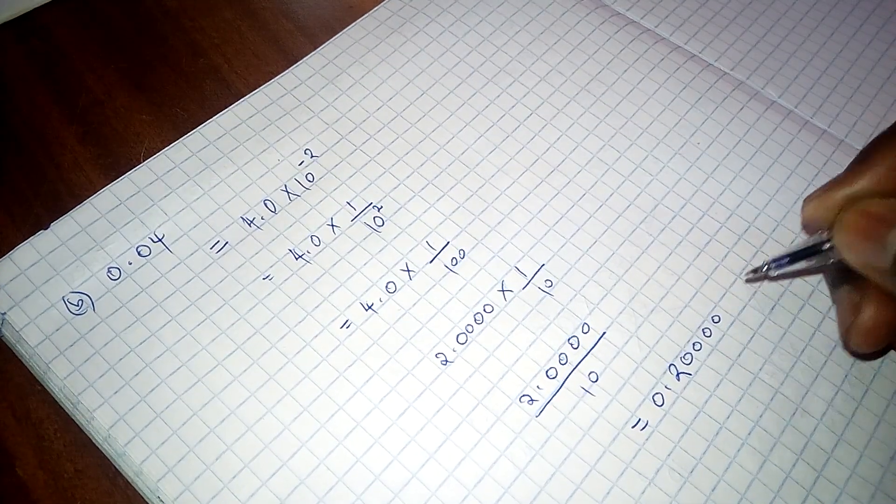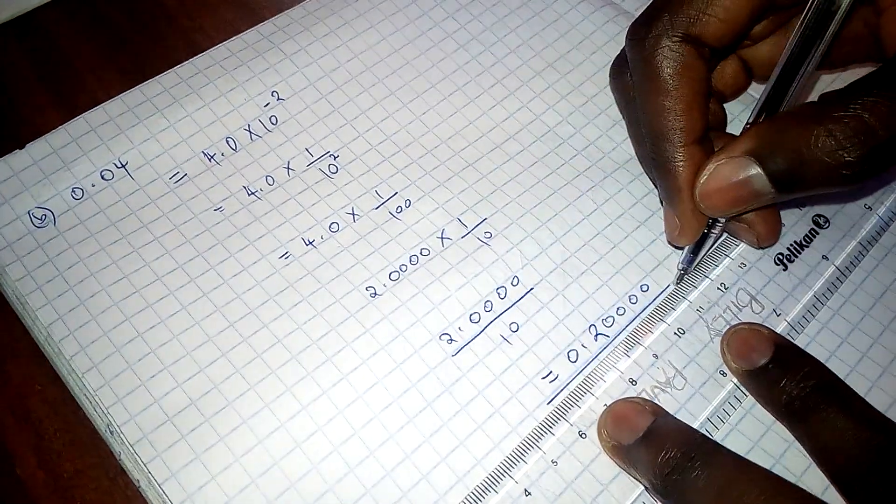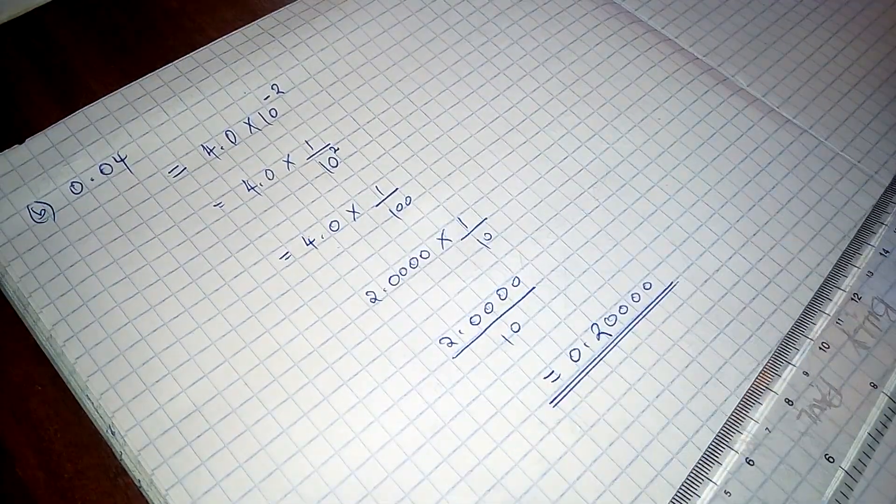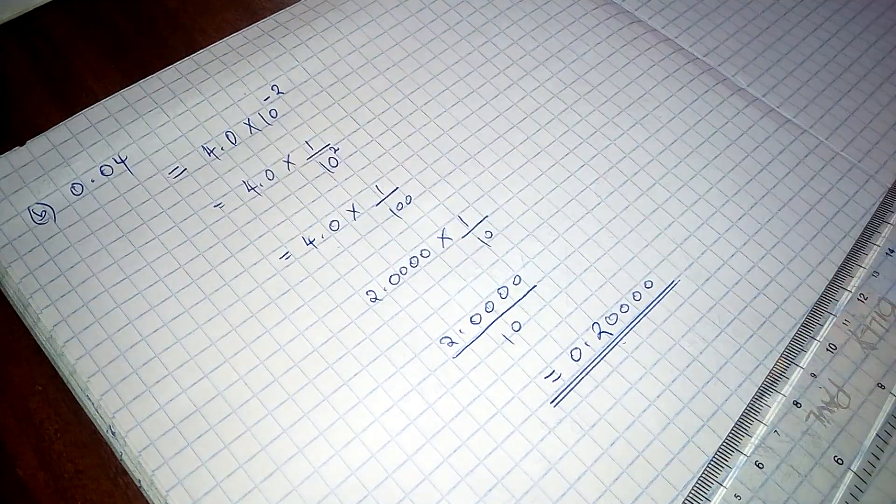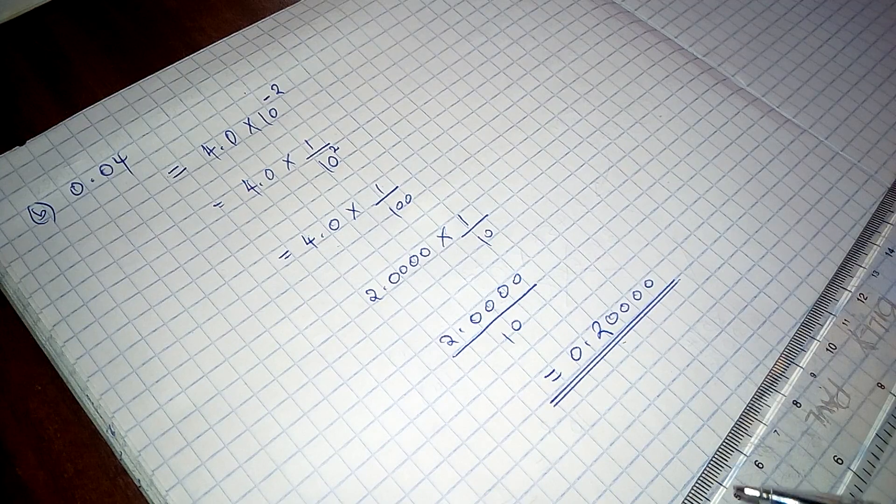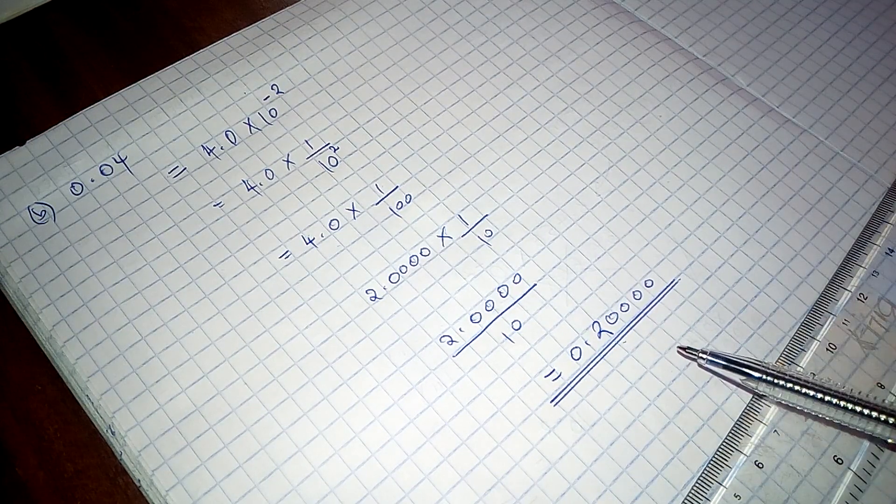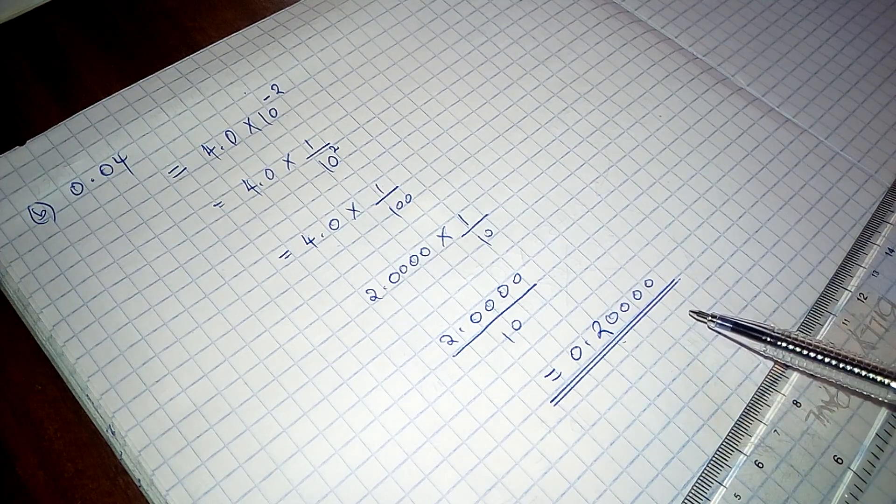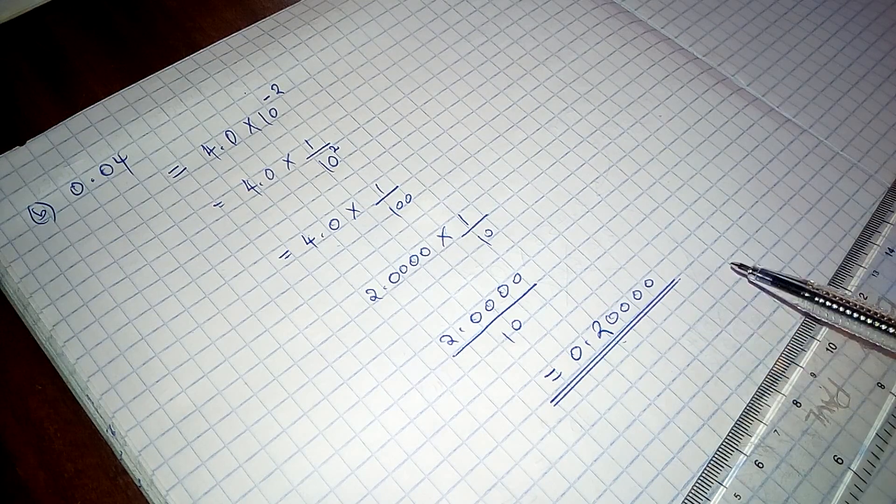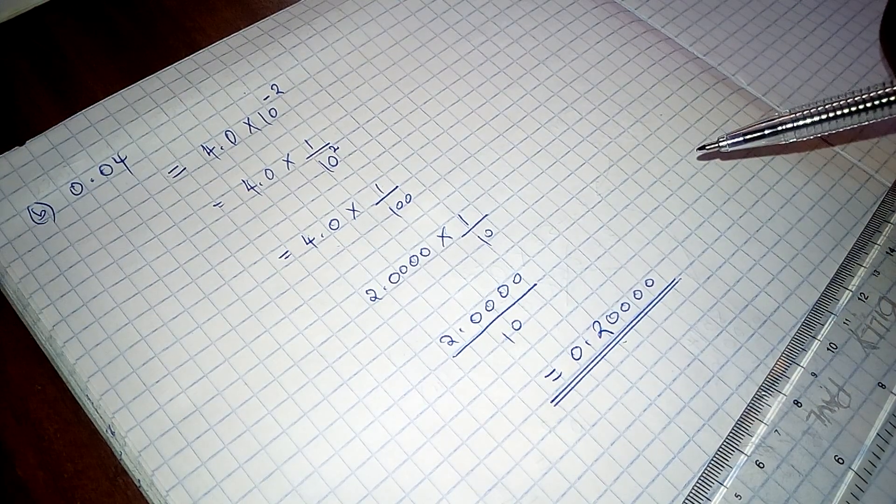So we say that this is the square root of this. Remember if zeros come after the decimal and there is no number that follows them immediately, then they can be recognized.